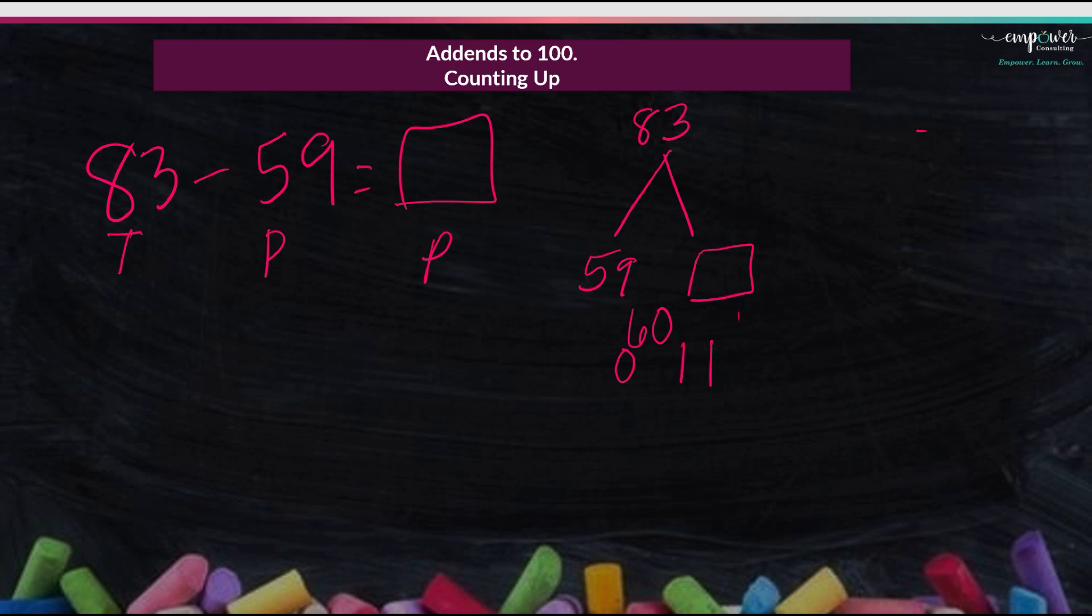And then I start from 60 and I say 70, 80, and now I'm at 80, and I count on from 1s again, 81, 82, 83. And then I count up everything I added, 10, 20, 21, 22, 23, 24. My total is 24.